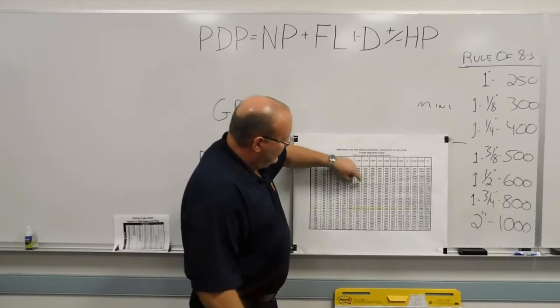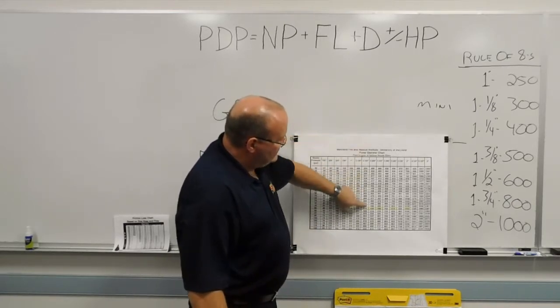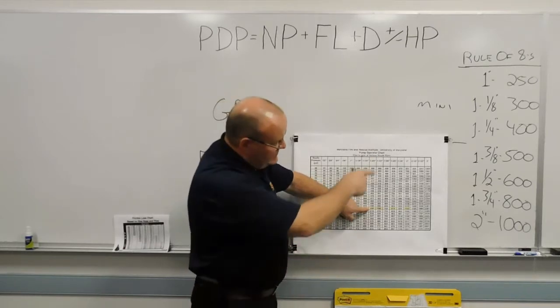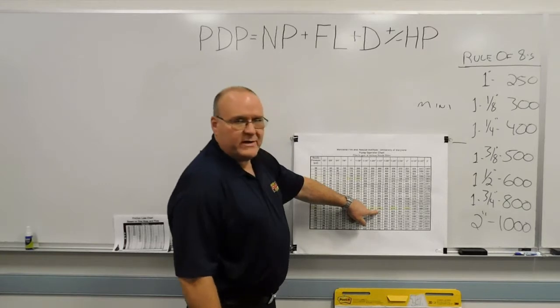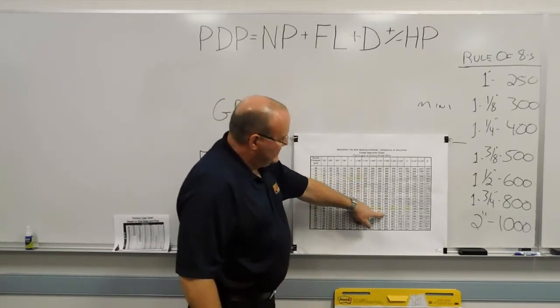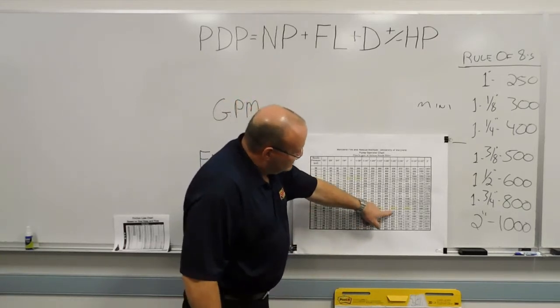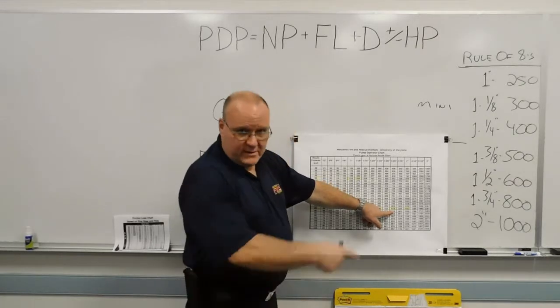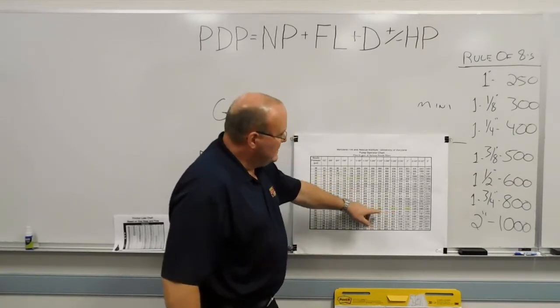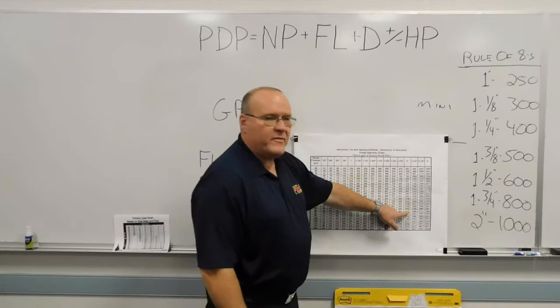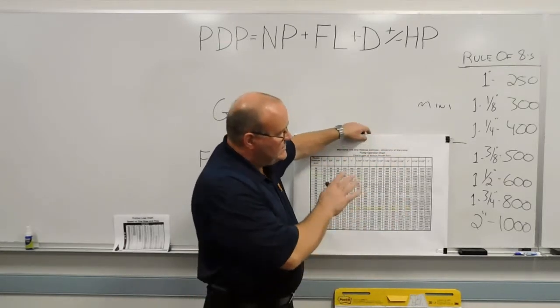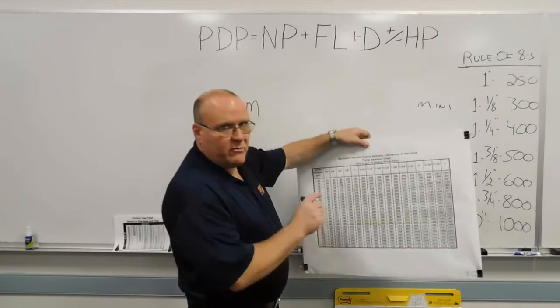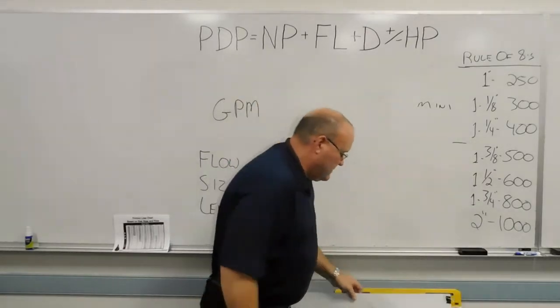On the deck guns with the large tips, inch and three-eighths, 502 gallons a minute. So you see 500 there. Inch and a half, 598, so you see 600. The inch and three-quarter is 814, and you see 800 in our estimation. And then the two-inch tip, 1,063, so you see 1,000 gallons a minute. So our estimation is pretty much on point with what they're delivering.